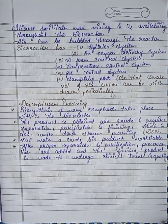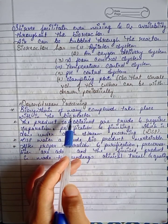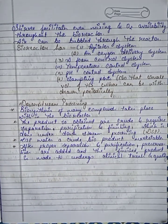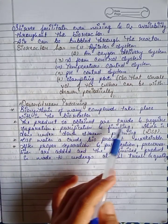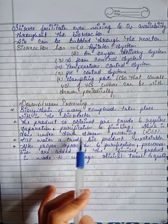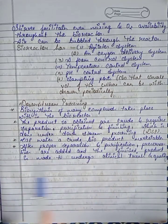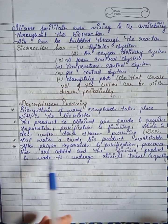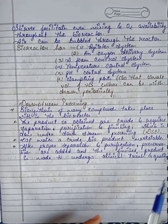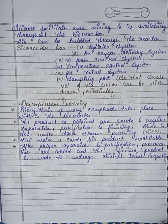Now let's study downstream processing. The biosynthesis of many compounds takes place within bio-reactors, but the products obtained are crude and require separation, purification, and finishing — done under downstream processing (DSP). After proper separation and purification, preservatives are added and the finished product undergoes clinical trials and quality testing.